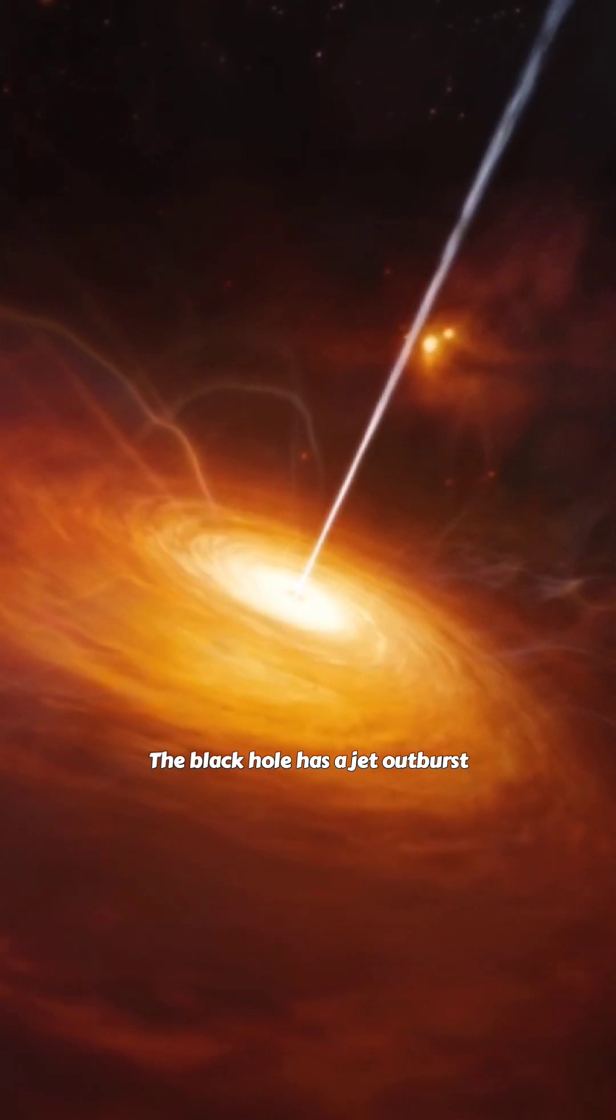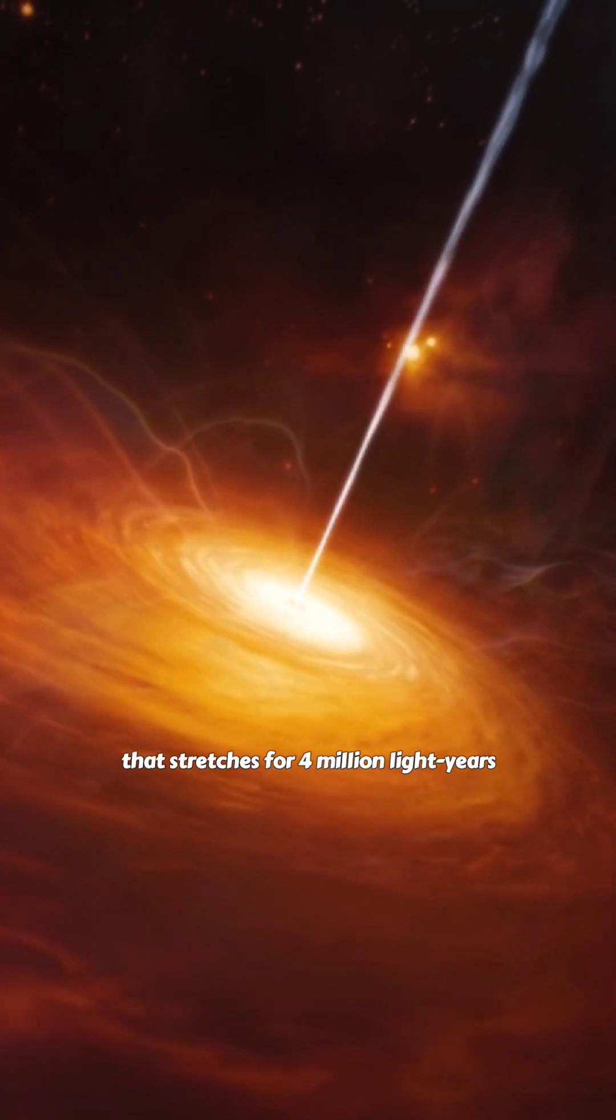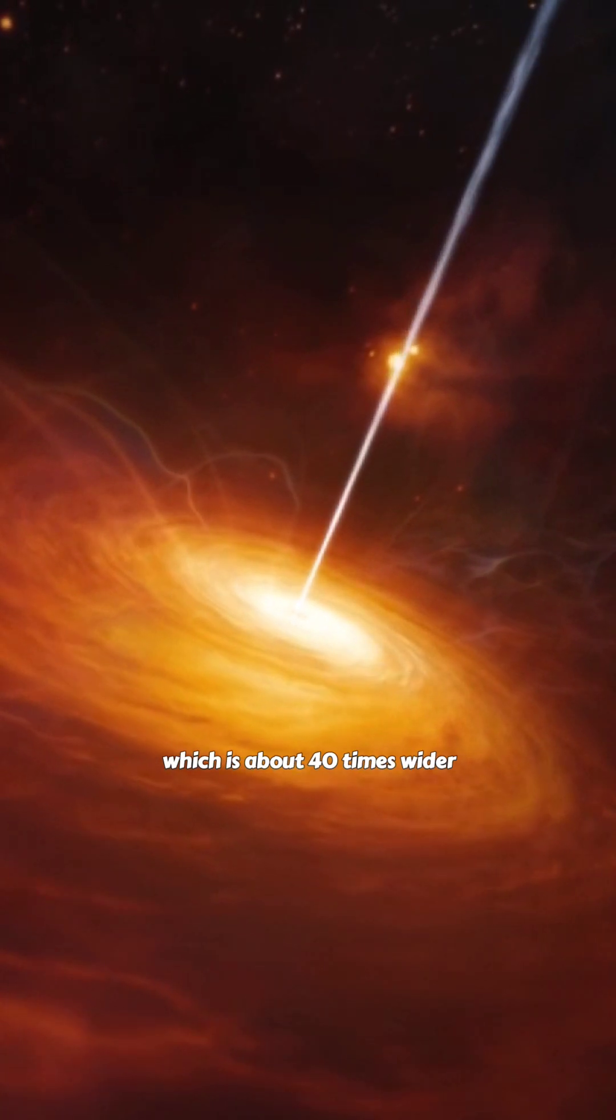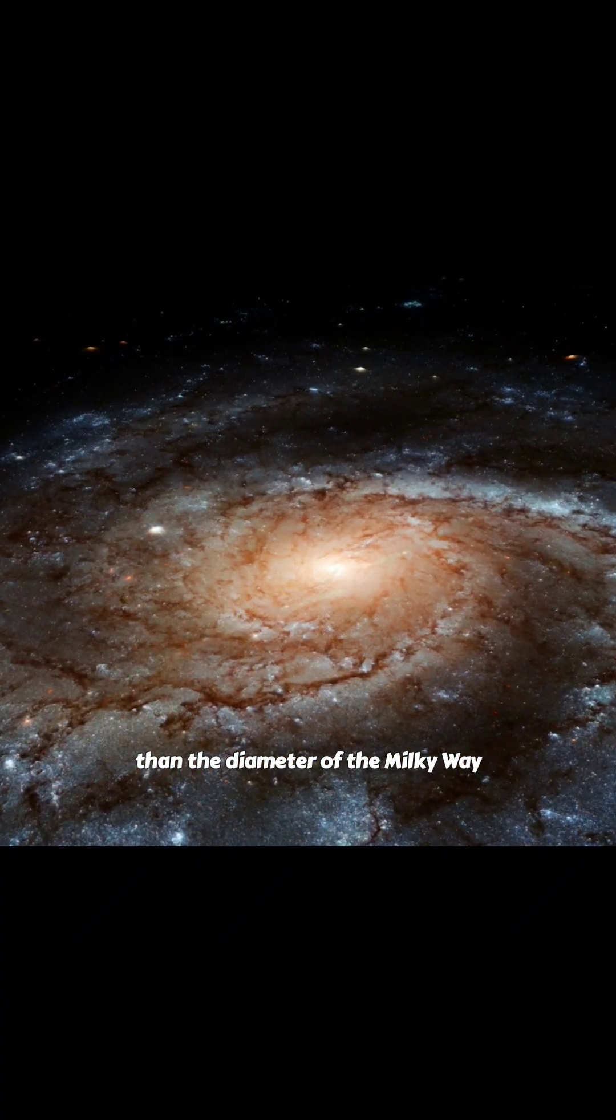The black hole has a jet outburst that stretches for 4 million light-years, which is about 40 times wider than the diameter of the Milky Way.